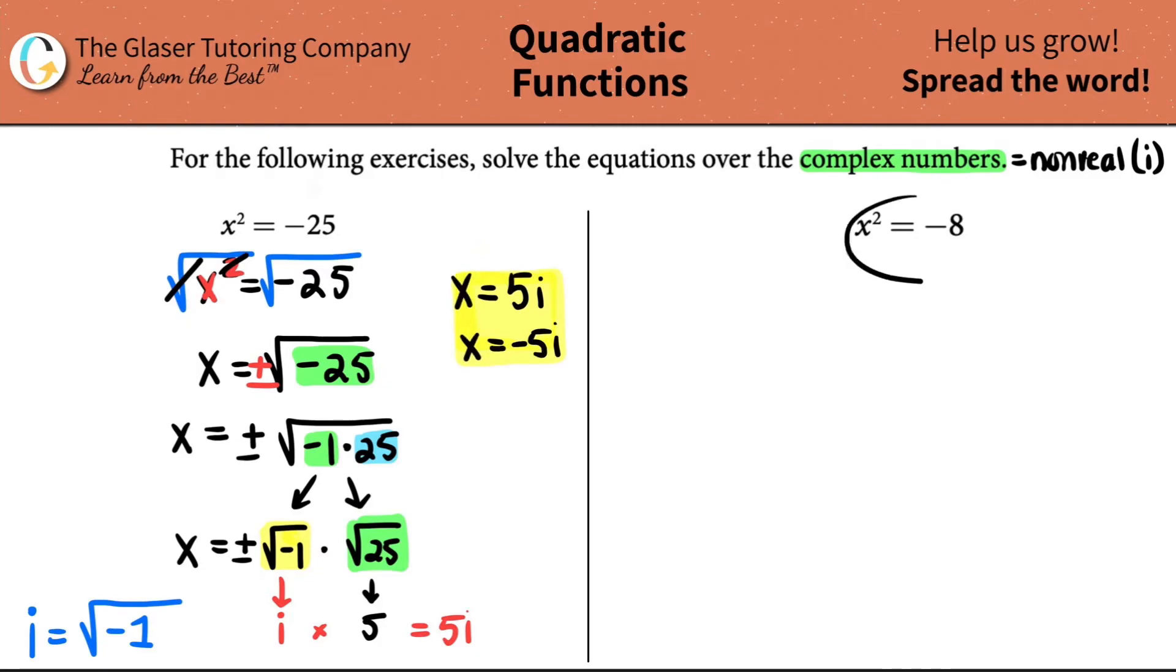Now, we just have to go to the second one. Here's the same exact idea. Let's see. X squared equals negative eight.